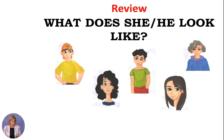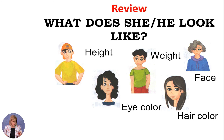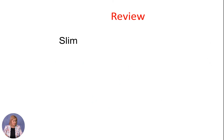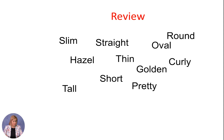Now it is time for a review. Today we talked about the question 'what does she/he look like?' You shall remember that this question is used to describe physical appearance generally — that means height, eye color, face, hair color, and weight. We also learned words such as slim, thin, round, curly, pretty, hazel, tall, straight, short, golden, and oval.